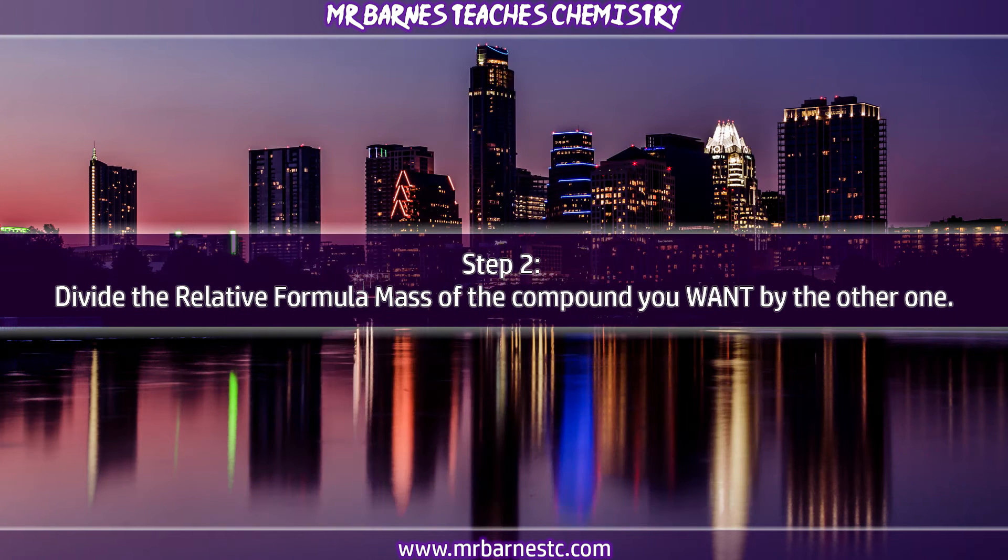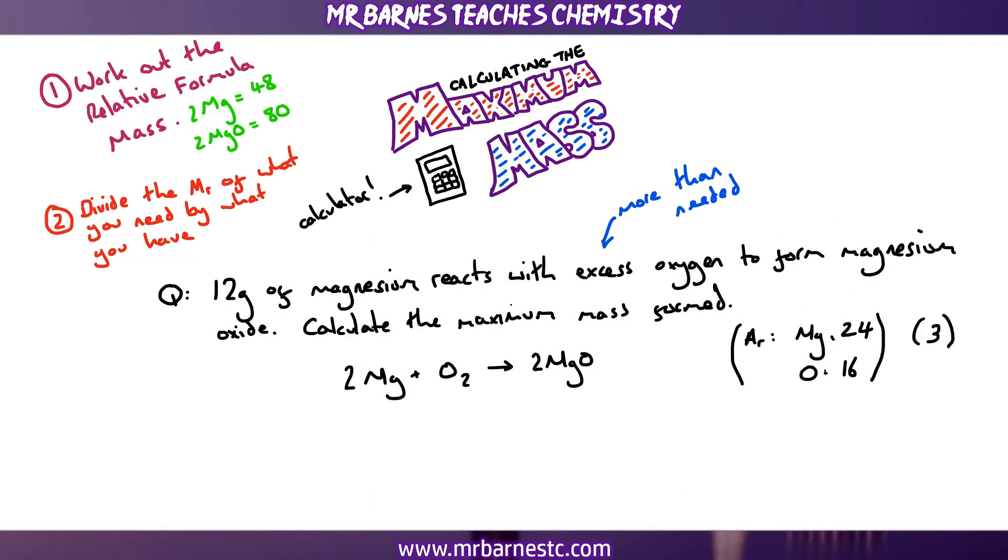The second step is to divide the relative formula mass which we've just worked out of the compound that you want to know the mass of which is magnesium oxide, by the relative formula mass of the thing that we've been given which is our magnesium. So let me show you that in the actual example. So as I said divide the MR, the formula mass of what you need. So in this one we want to work out the mass of magnesium oxide. So that is the thing that we need. So we put that in at the top.